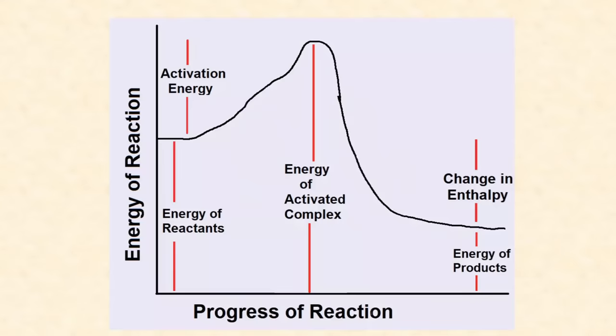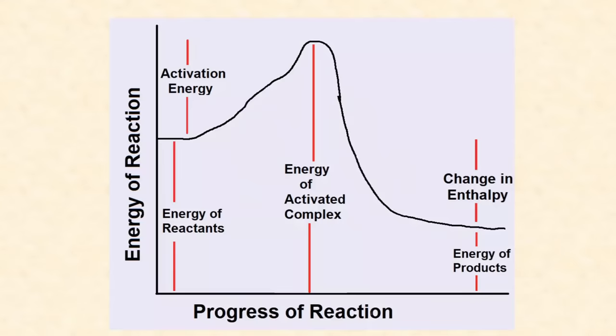For molecules to react, they have to collide with enough energy and in the right orientation. When they do, a high energy transition state can form, which is at the peak on this graph. Then, the products can be formed. The energy required to start this reaction is called its activation energy. This reaction has a net loss of heat to the surroundings, which makes it an exothermic reaction.